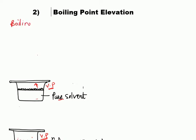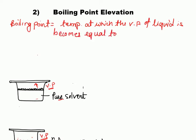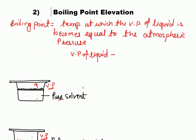Boiling point is the temperature at which the vapor pressure of the liquid becomes equal to the atmospheric pressure. While boiling the solution, atmospheric pressure is kept constant. For example, consider the case of a pure solvent — we can take any solvent such as acetone or ethyl acetate.